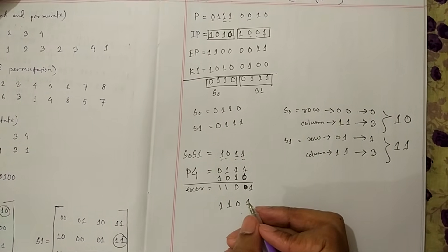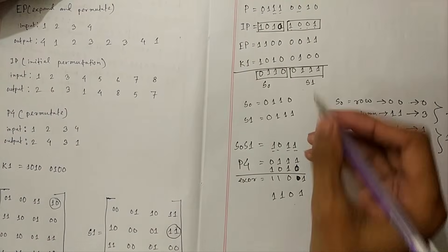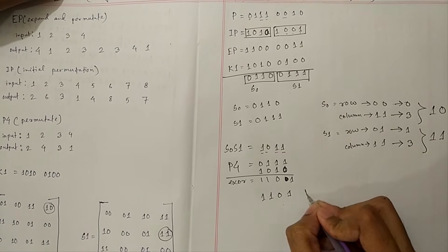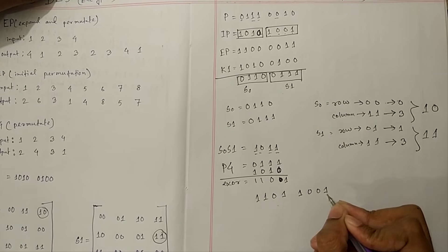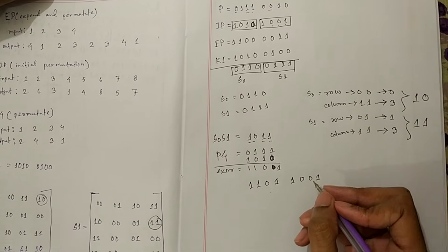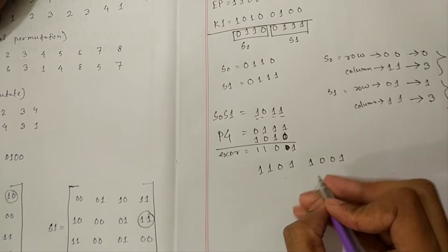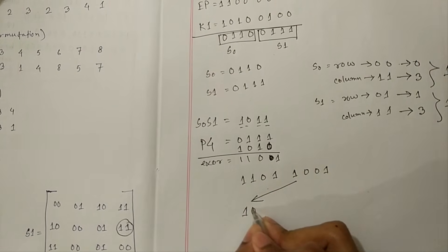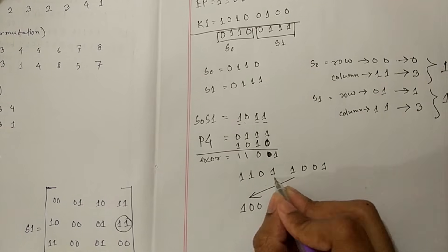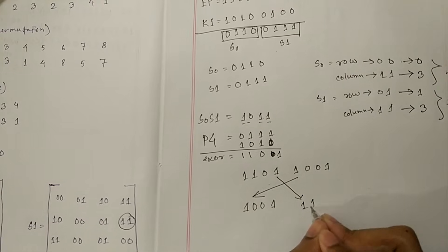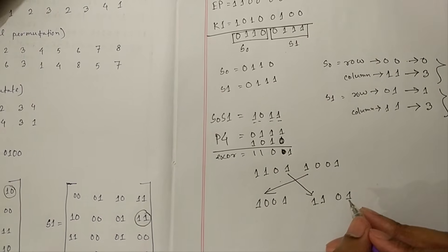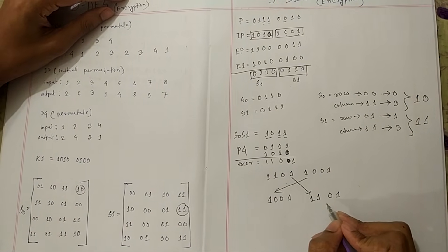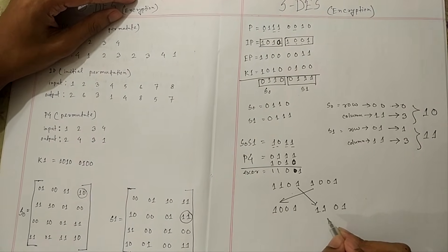Now we place this value here. The left half becomes 1, 0, 0, 1 and the right half becomes 1, 1, 0, 1. Our work for the first round is almost finished. We just swap these two values. The swapped result gives left 1, 1, 0, 1 and right 1, 0, 0, 1. We have now completed the first round. For the second round, we go through the same process.